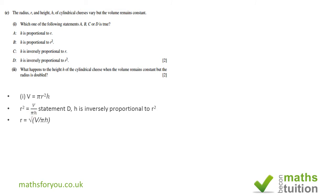Next question: what happens to the height h of the cylindrical cheese when the volume remains constant but the radius is doubled? I've got two equations: V = πr²h₁ when the radius is r. When the radius is doubled, we have V = π(2r)²h₂, where the radius is doubled but the volume is the same.